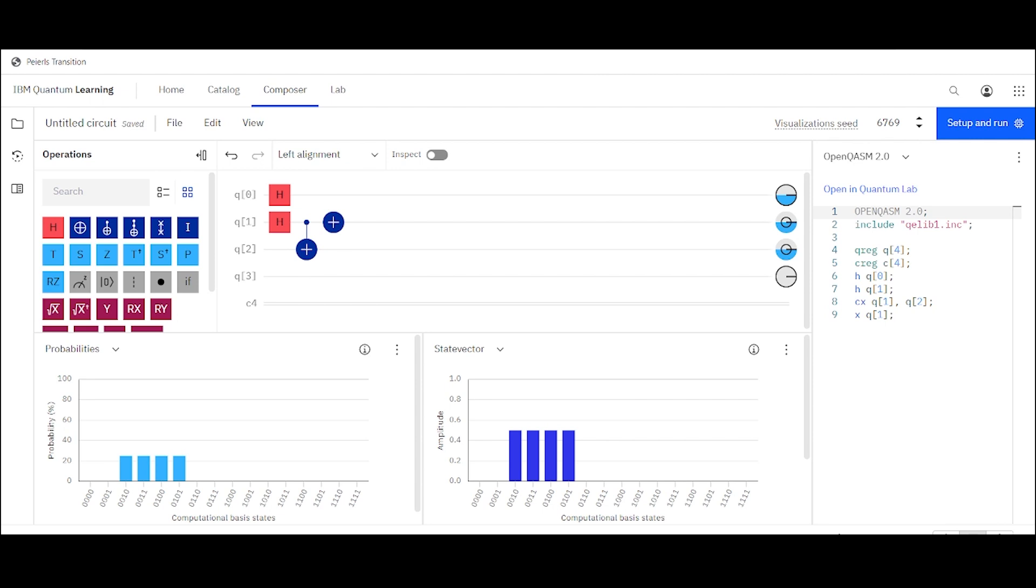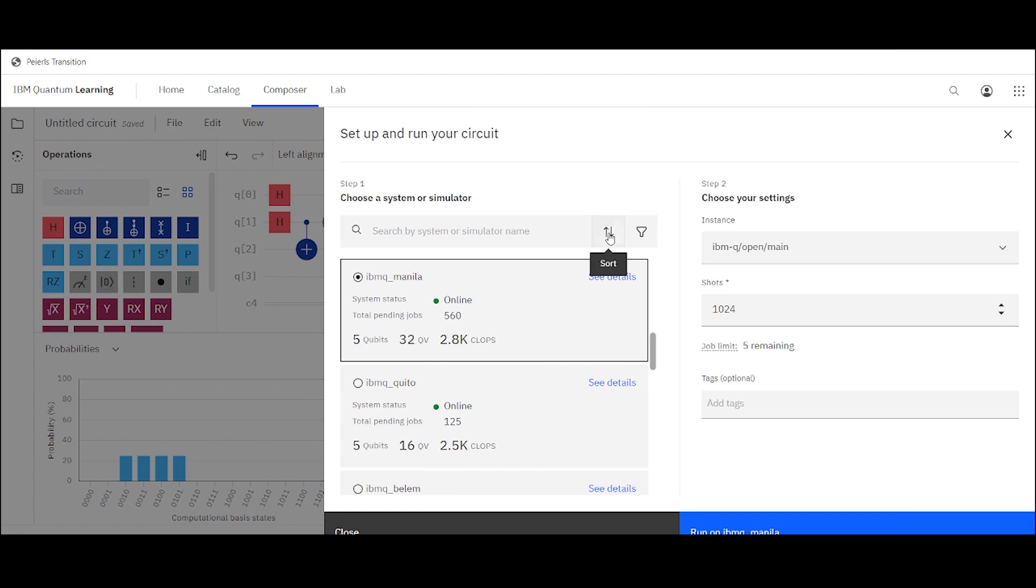So does this make quantum computers weak? Well, not so fast. To rescue our accuracy, we can just run the algorithm multiple times, and go with the answer that appears most frequently. In fact, if you're using IBM's quantum computers right now, you'll see the shots count. This indicates how many times they've run your algorithm to build a probability spread. It's usually over a thousand times.